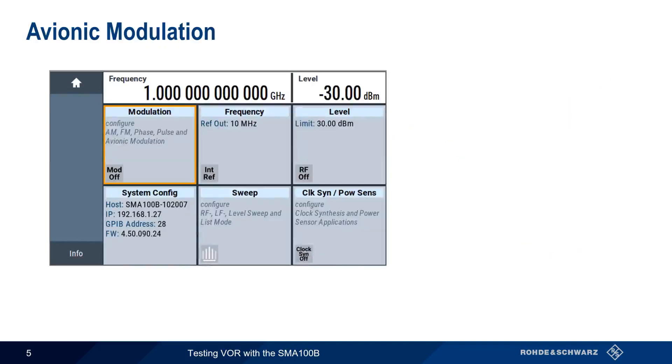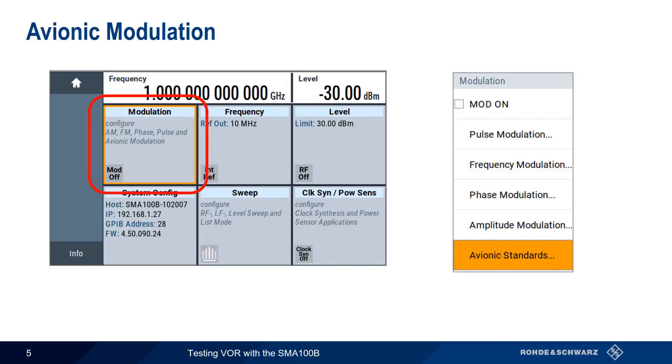To access the different avionics modulation types on the SMA-100B, including VOR, first select the modulation tile, then choose Avionics Standards from the list of available modulation types.